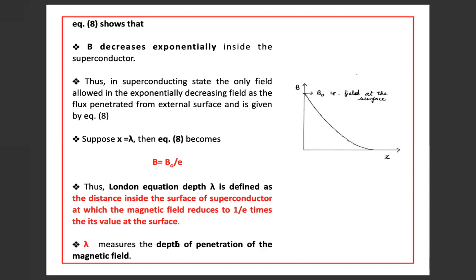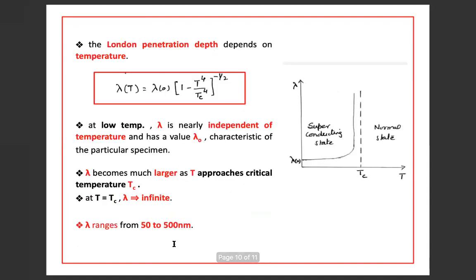Lambda measures the depth of penetration of the magnetic field. The London penetration depth depends on temperature, and from its variation equation it is clear that at low temperatures lambda is nearly independent of temperature and has a value lambda₀, characteristic of the particular specimen. As T approaches the critical temperature, lambda becomes much larger, and at T equal to Tc, lambda becomes infinite. In general, lambda ranges from 50 to 500 nanometers.